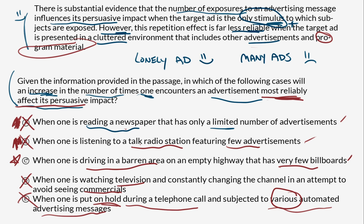So that leaves us with option C, because the more often our driver sees a billboard on this very uncluttered highway, the more effective its persuasive impact will be. And I didn't derive this from common sense or my experience driving on abandoned highways — all of this we pulled from the passage. So if you see a question like this, restate what the rules are in your own words, come up with a test, and then apply that test to the choices.